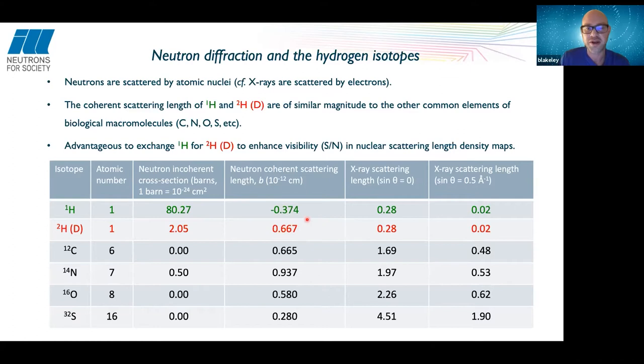The scattering strength of deuterium is approximately twice that of hydrogen and is actually a positive scatterer rather than a negative scatterer. The fact that deuterium is a positive scatterer means we can avoid cancellation issues between positive and negative scatterers. For example, in a CH₂ group at medium resolutions of around two Ångströms, there can be cancellation between the carbon and the hydrogens. When we exchange hydrogen for deuterium, we have two positive scatterers and no cancellation — which is super important for interpreting the maps.